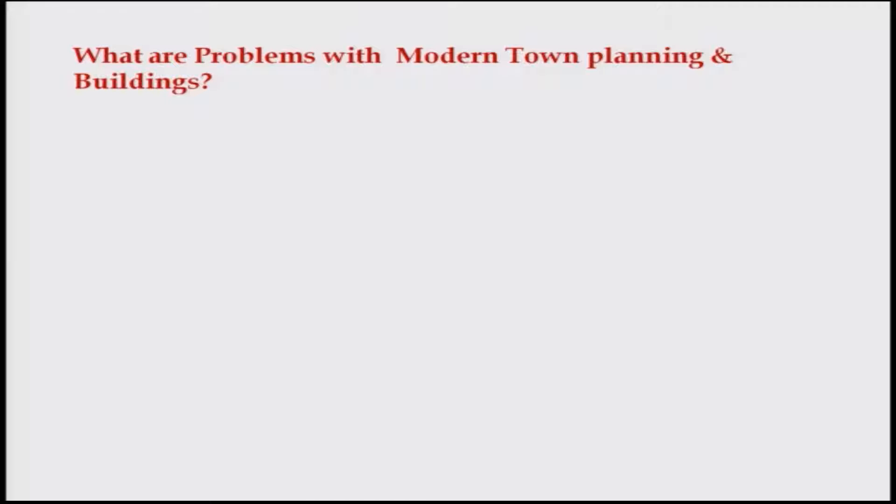We will recall what we had learnt in the last lecture. We basically looked at rural housing, and before that about agriculture and textile. Today we will be talking about urban housing and town planning in ancient India, and what are the problems with modern town planning and buildings, and whether we can get some solutions from ancient Indian town planning.